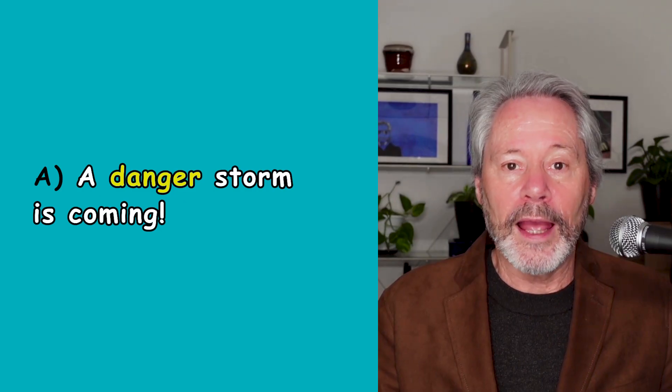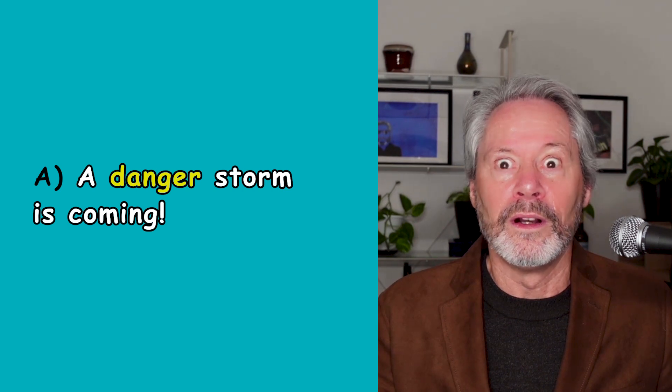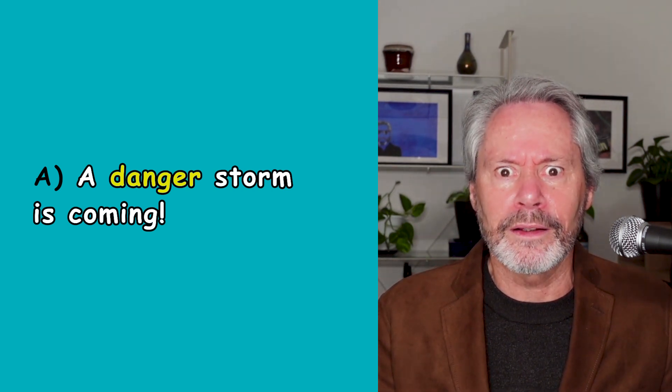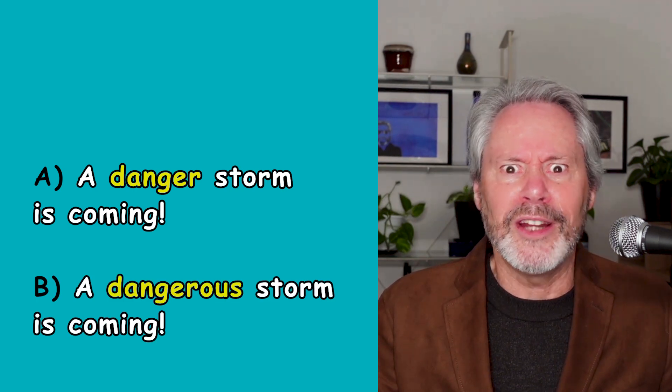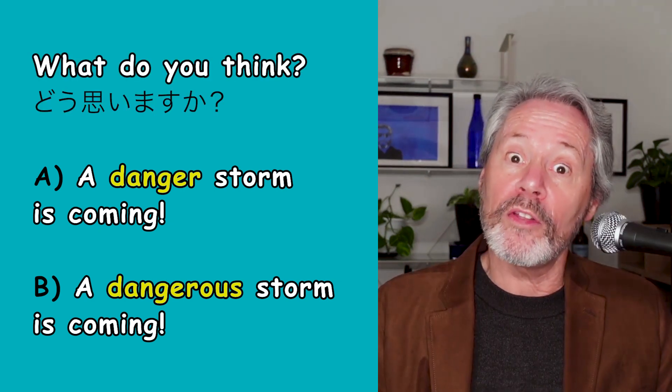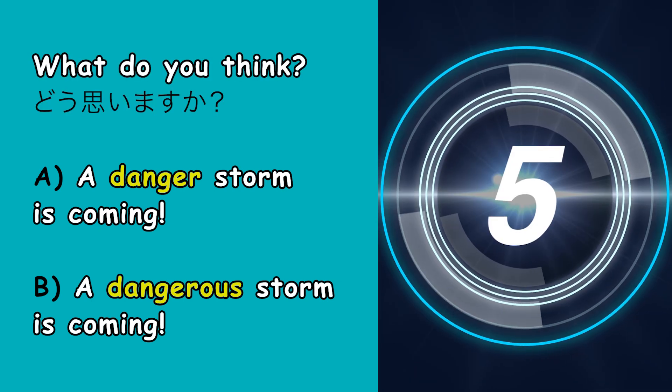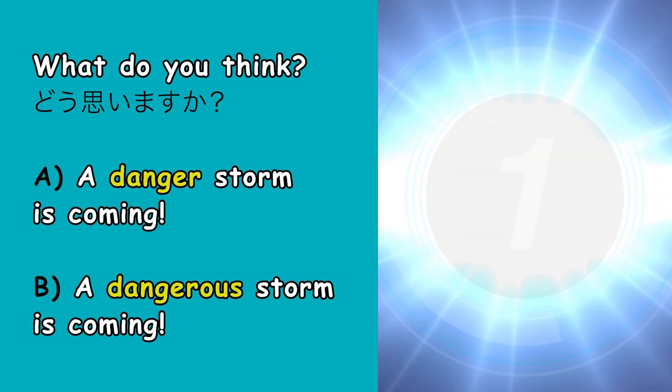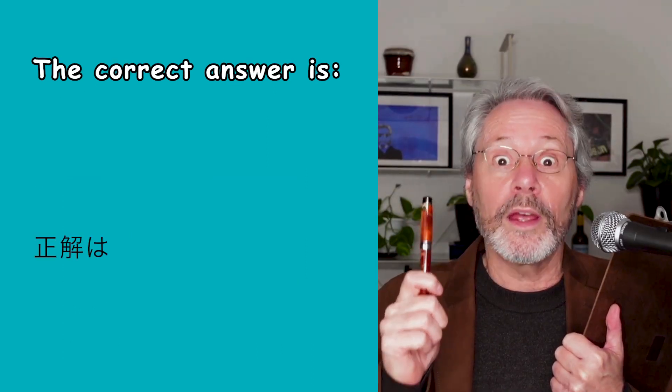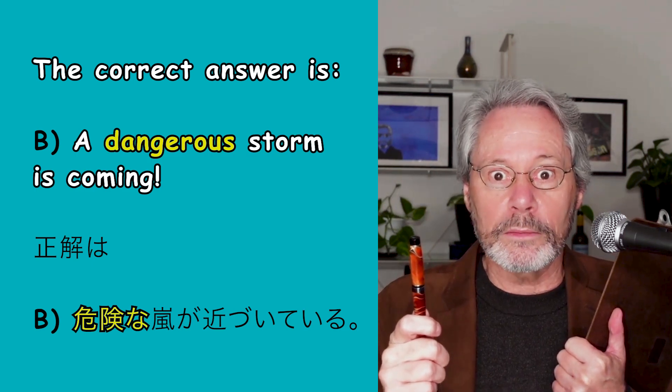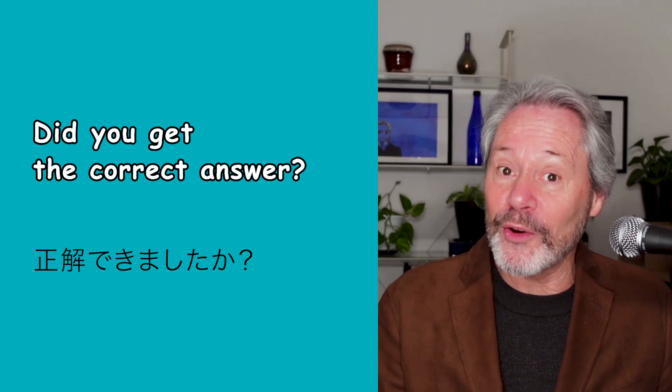Question number one. A. A dangerous storm is coming. B. A dangerous storm is coming. What do you think? The correct answer is B. A dangerous storm is coming. Did you get the correct answer?